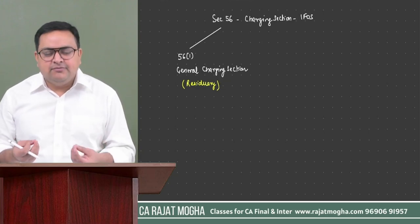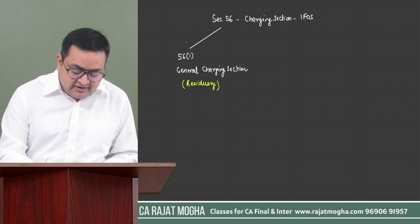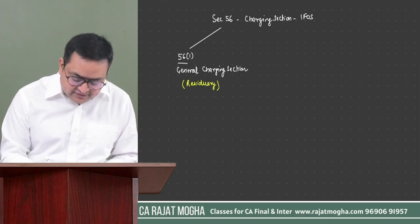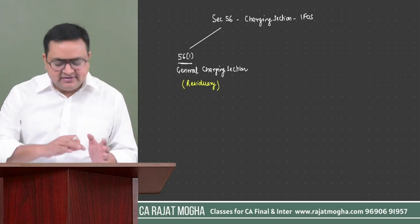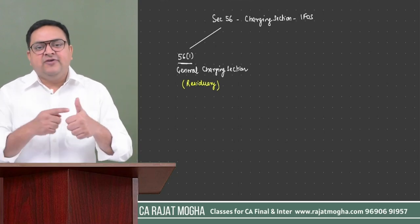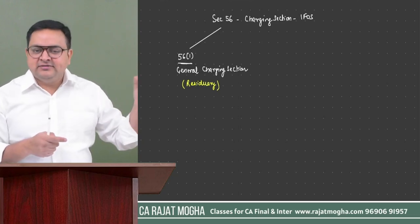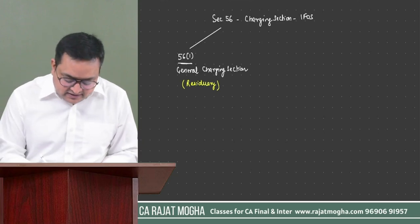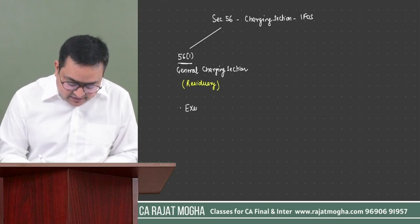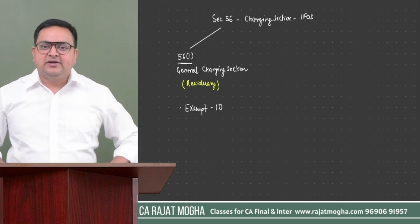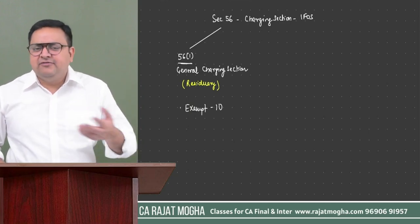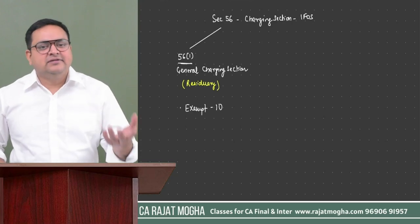We also apply further conditions — we check whether that income is exempt under Section 10. Because if it is exempt under Section 10, then we cannot tax that income; it will not go into any head as it is exempt income.